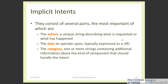More in detail, an implicit intent consists of three main parts: the action — a unique string describing what is requested; the data — typically a URI; and the category — one or more strings containing additional optional information. For example, you can have an implicit intent where the action is 'view' and the data is a URL. You send this intent to Android and Android will open one or more browsers installed on the phone.